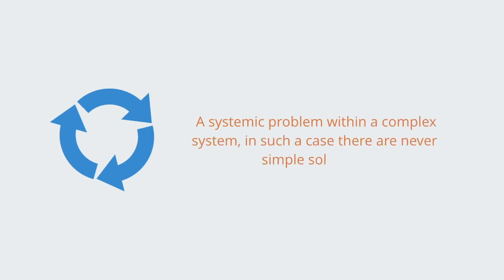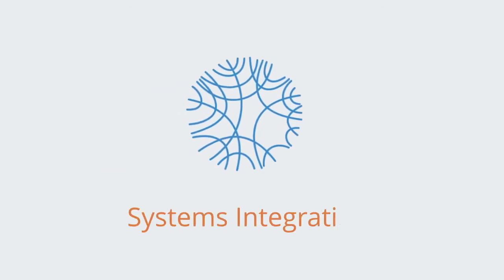Altering the properties of the components will give us linear incremental improvements in the whole system. But altering how those components interact can give us the kind of non-linear evolutionary transformations that are desired. Put simply, we are dealing with a systemic problem within a complex system. In such a case, there are never simple solutions. The most important thing is to give up the idea that there is one simple solution, and begin to focus our attention on the system's overall integration.